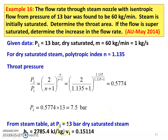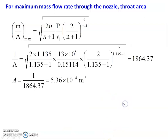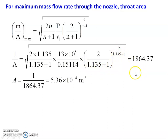From steam table at P1 = 13 bar, dry saturated steam: H1 = 2785.4 kJ/kg and V1 = 0.15114 m³/kg. For maximum mass flow rate, throat area: M/A (maximum) = sqrt[(2/(N+1)) × (P1/V1) × (2/(N+1))^(2/(N-1))]. Substituting mass flow rate = 1 kg/s, area = 1/10864.37 m² = 5.310 × 10⁻⁴ m².